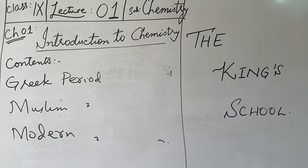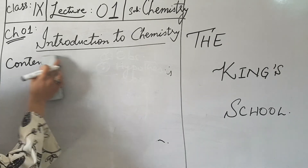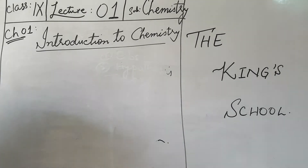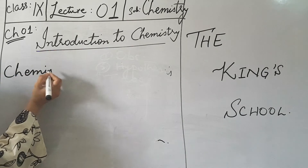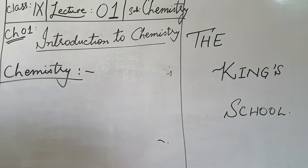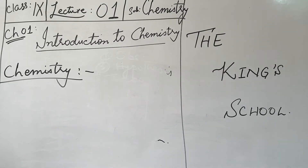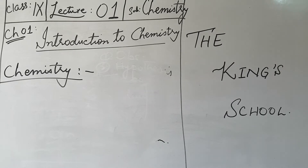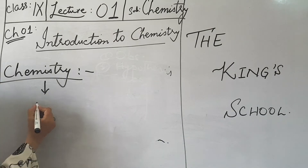Now we start the chapter with the definition. What is chemistry? Chemistry is the branch of science. As you know, there are three main branches of science: physics, biology, and chemistry. Chemistry is one of the most important branches of science. It is that branch of science that deals with the properties, composition, and structure of matter.